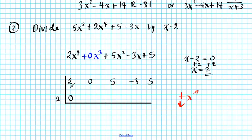So we're going to add down. 2 plus 0, 2. Multiply across. 2 times 2, 4. Add down. 2 times 2. Multiply across. 8. And then add down.